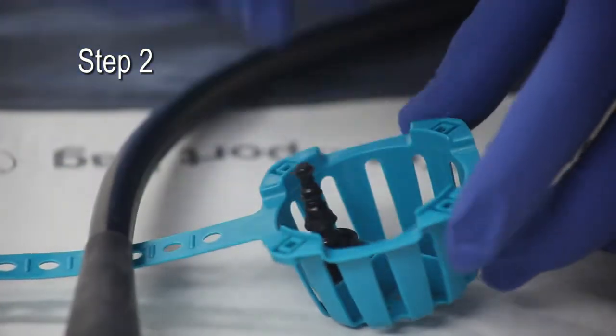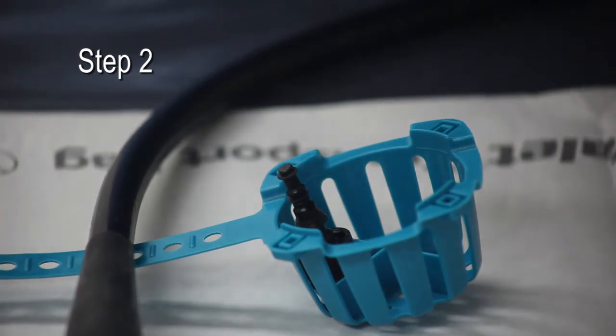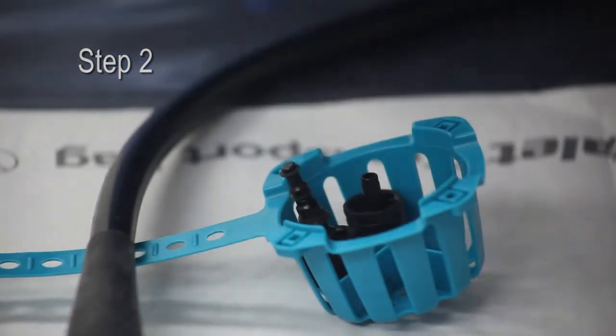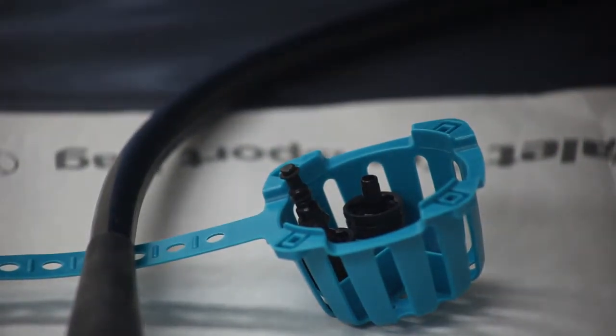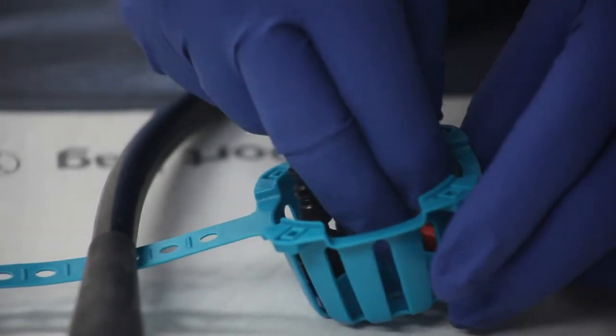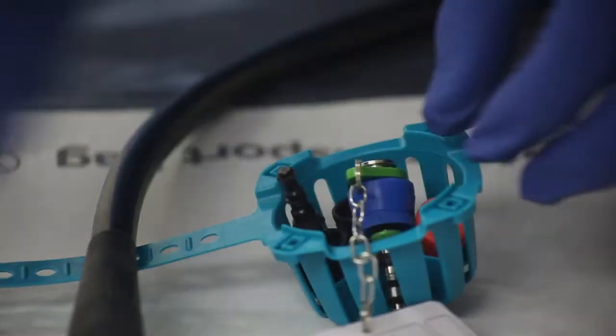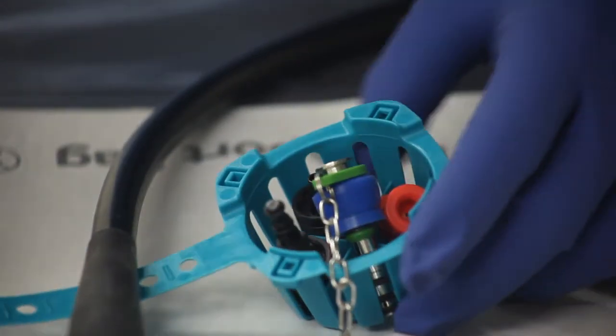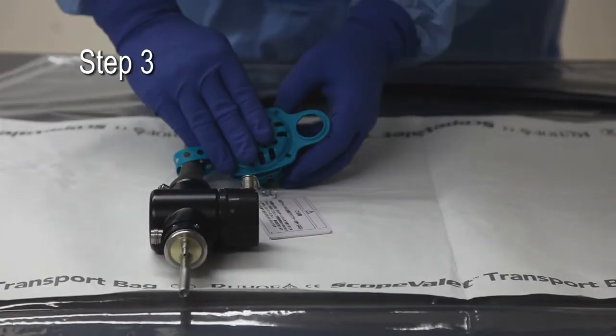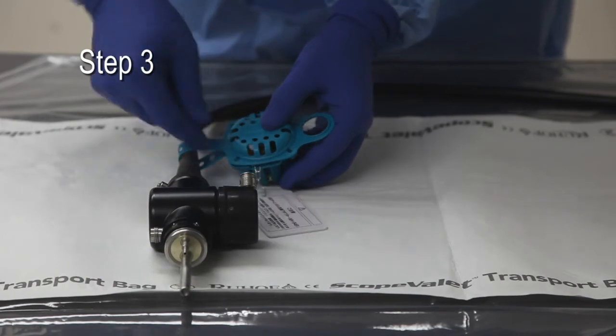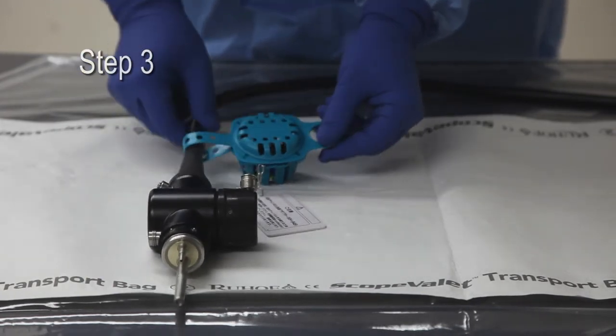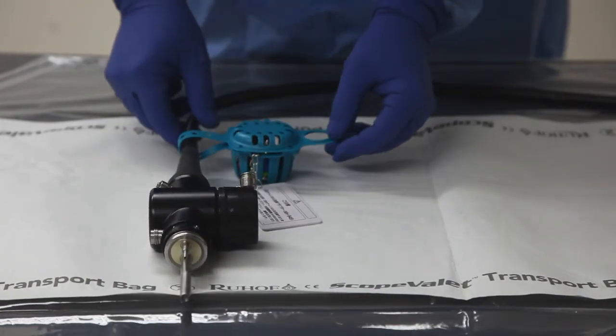Place the valves into the open ValveSafe. The chain of the air-water cleaning adapter should pass through a recess so that the plastic instructions remain outside of the cage. Close the top of the ValveSafe around the scope's umbilical cord, ensuring the four pins are fully located into the opposite housings.